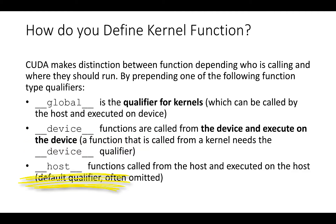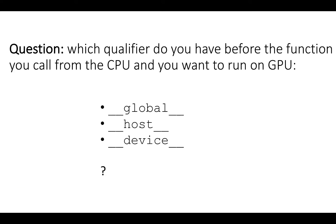Finally, the __host__ qualifier is for a function that is called from the host and executes on the host. A question for us: which qualifier do we use before a function when we call it from the CPU to run on the GPU? The answer is __global__.